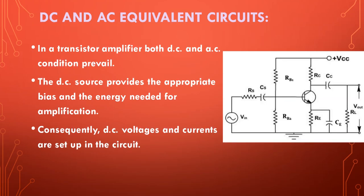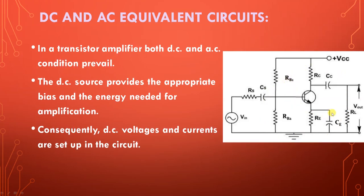In a transistor amplifier, both AC and DC conditions prevail. In this circuit diagram, we can see that it contains both a DC source as well as AC. The function generator provides the AC source and the power supply, plus VCC, is the DC source. So in this CE amplifier, both DC as well as AC conditions prevail.